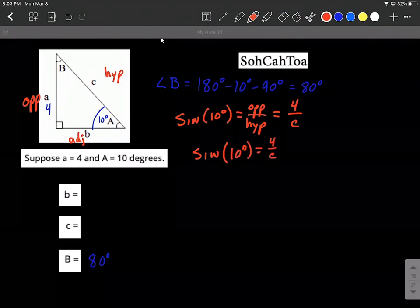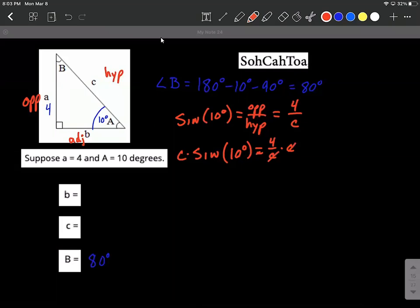Our goal to solve for C is going to be difficult if C is stuck in the denominator. So let's go ahead and multiply both sides by C to get it out of the denominator. Multiplying and dividing by C will counteract each other. So now we have C multiplied by sine of 10 degrees equals 4.